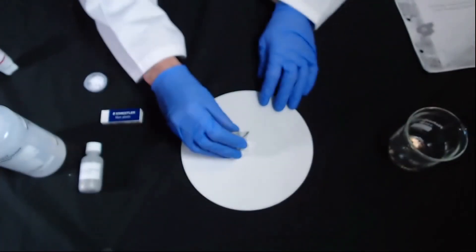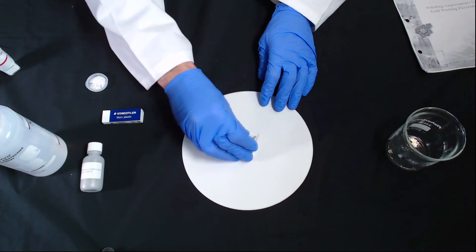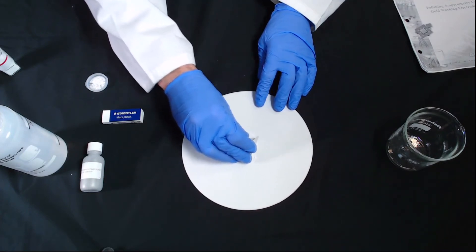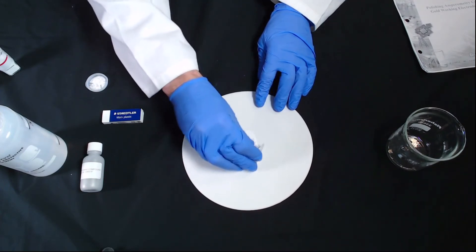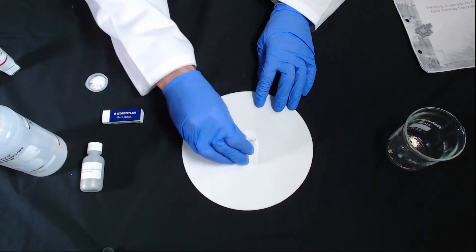What we're going to do then is just polish for around five minutes. It's good to polish in a figure of eight like this. We would do this for about five minutes, and that's going to polish the electrode.